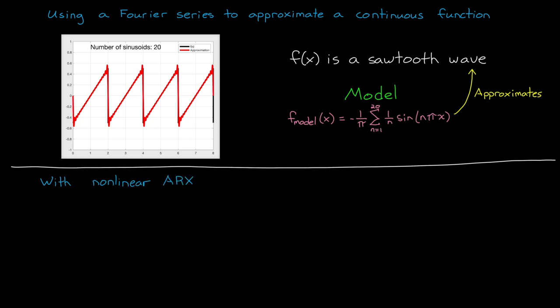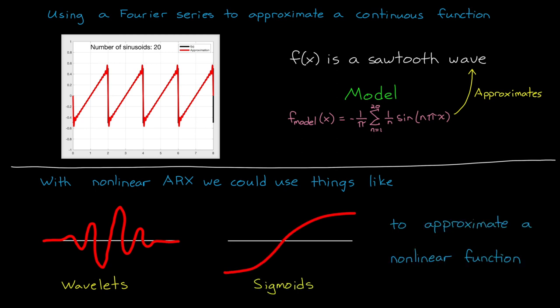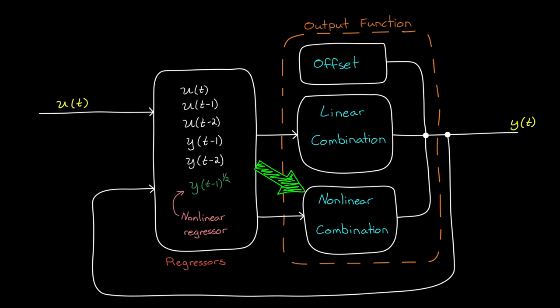Similarly, in a non-linear ARX model, we could use non-linear building blocks like wavelets or sigmoids to approximate the non-linear function, even if those functions aren't the underlying mechanisms that created the data. Similarly, larger networks of those elements could, in general, fit the data more accurately. That's essentially what we're trying to do with our non-linear output function. We're using these non-linear building blocks to approximate the mapping between the regressors and the output.